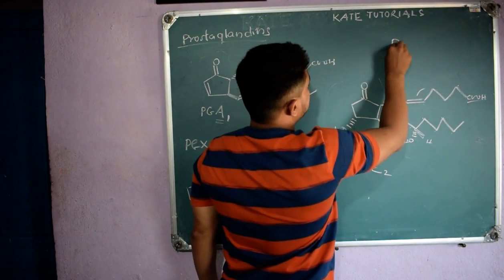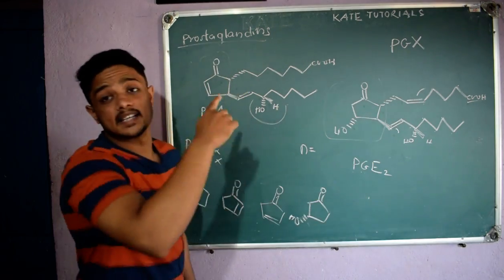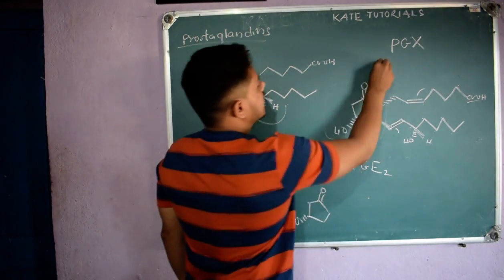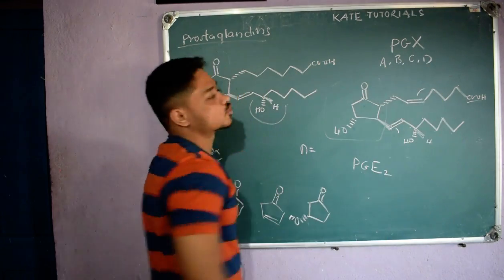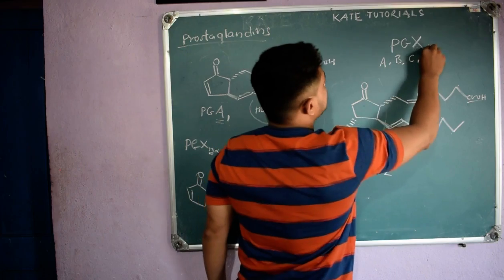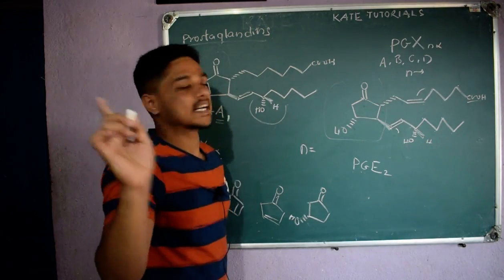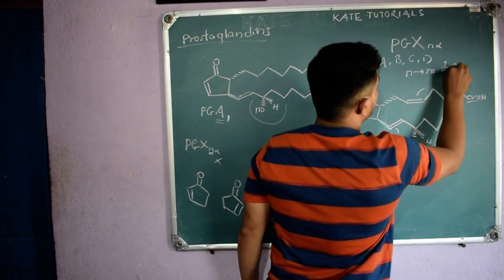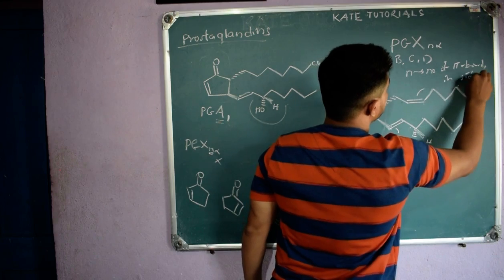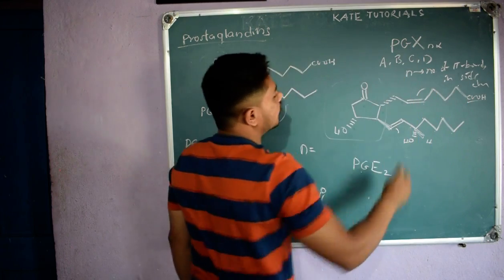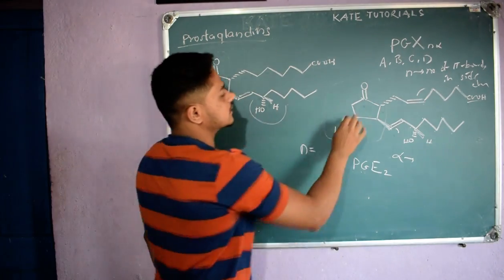In summary: PG stands for prostaglandins; X is determined by the structure of the cyclopentane ring and can be A, B, C, D, etc.; N is the number of pi bonds in the side chains; and alpha refers to stereochemistry at C9 — below the plane is alpha, above the plane is beta.